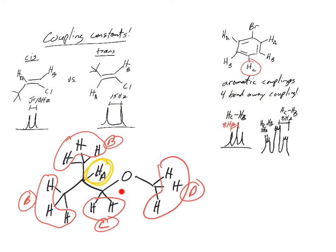So what does C turn A into? So C is how many? N is equal to one, two, two. So N plus one, two plus one is three. So HA, because of HC, gets turned into a triplet.